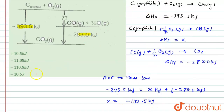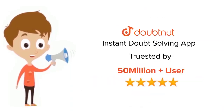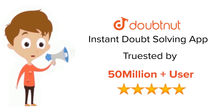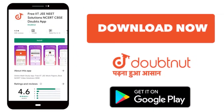The answer will be option C. Thank you. For class 6th to 12th, IIT JEE and NEET level, trusted by more than 5 crore students — download Doubtnut app today.